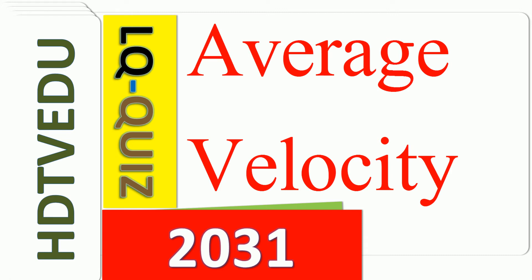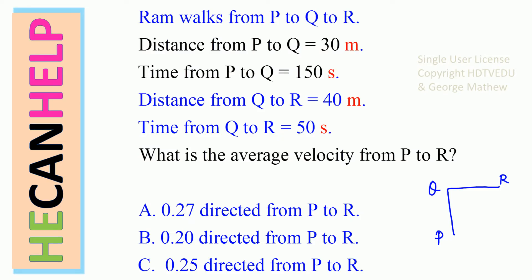Quiz 2031: Average Velocity. Ram walks from P to Q to R. The distance from P to Q is 30 meters, and the time from P to Q is 150 seconds. The distance from Q to R is 40 meters, and the time from Q to R is 50 seconds. What is the average velocity from P to R?